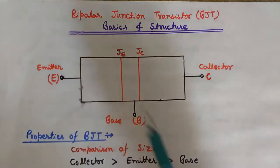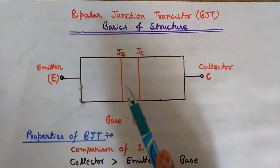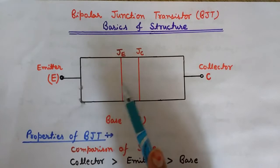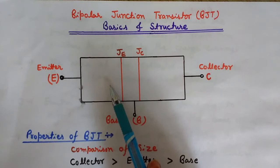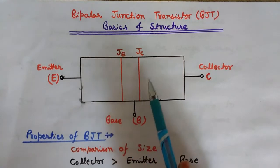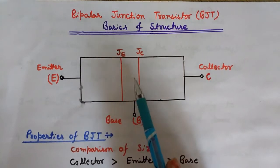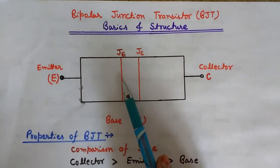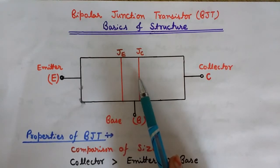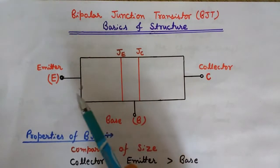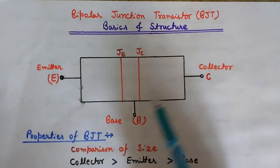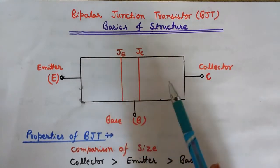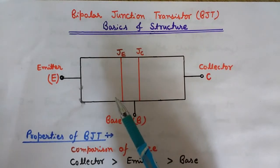BJT is a two-junction device. There is the emitter junction and the collector junction. The three regions are emitter, base, and collector. The junction between base and emitter is known as the base-emitter junction, and the other is the base-collector junction — in short called emitter junction and collector junction. So there are three terminals: emitter, base, and collector.